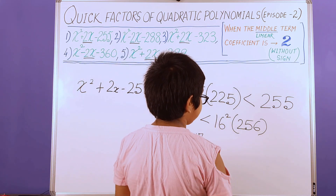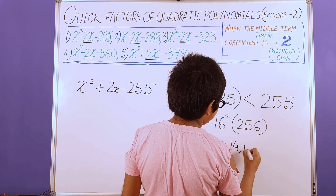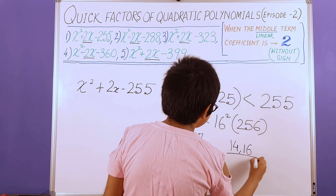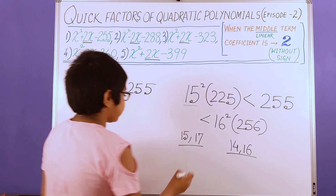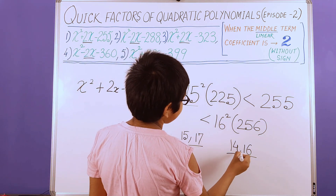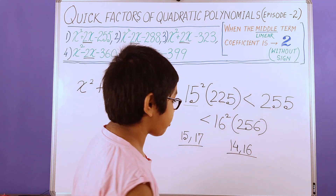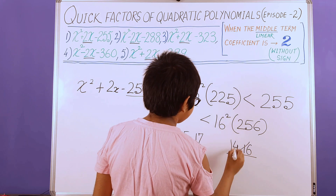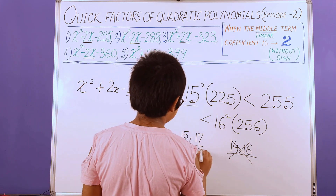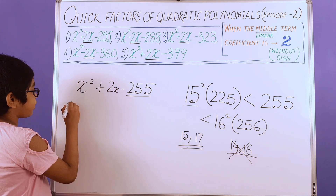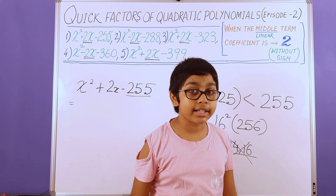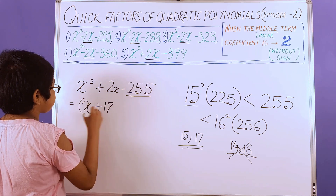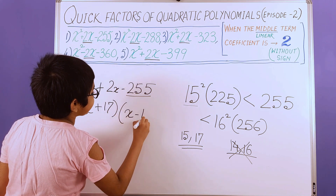We need to subtract 2 from the bigger number, and we get the pair 14 and 16. Now, the product of two odd numbers gives an odd number, and the product of two even numbers, 14 and 16, gives an even number. Obviously, we have an odd number here, so we take the odd pair. We have a positive sign from 2x, which tells us the bigger number should be positive and the smaller should have the negative sign. So our factorization is (x + 17)(x − 15).